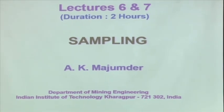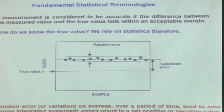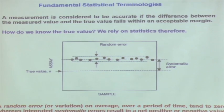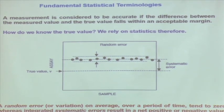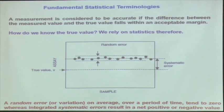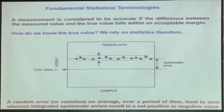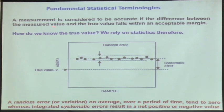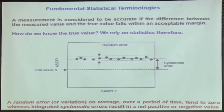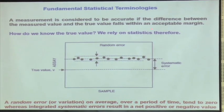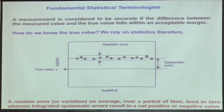So this is the topic of sampling. Now to understand sampling, I know that everyone of you are familiar with these terminologies, but I want to rephrase it. So the fundamental statistical terminologies: a measurement is considered to be accurate if the difference between the measured value and the true value falls within an acceptable margin.